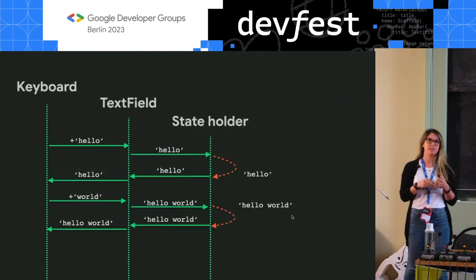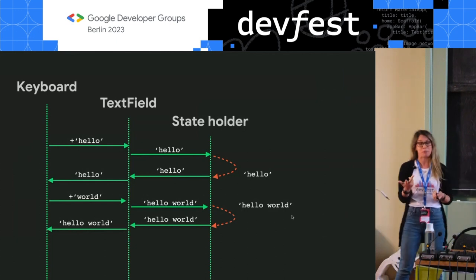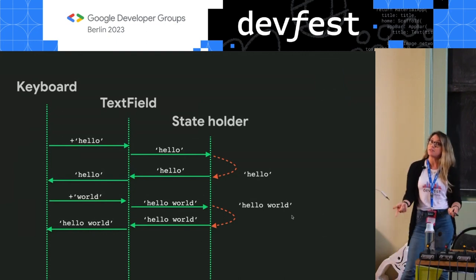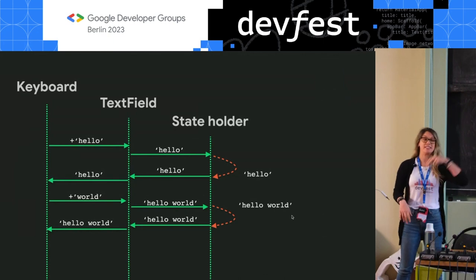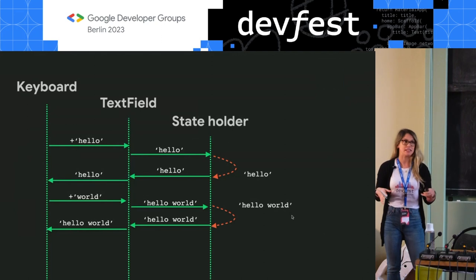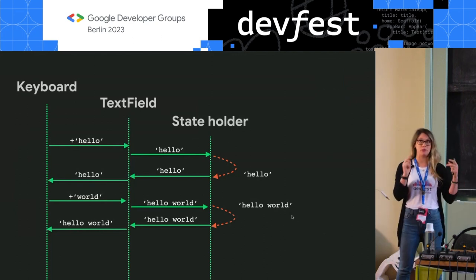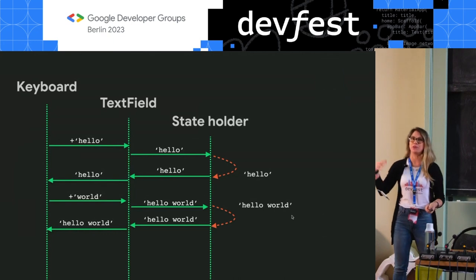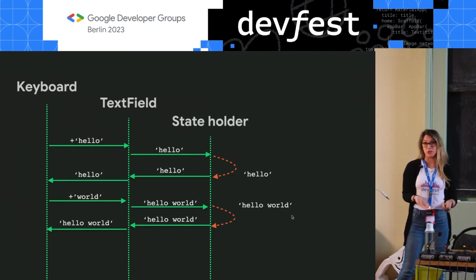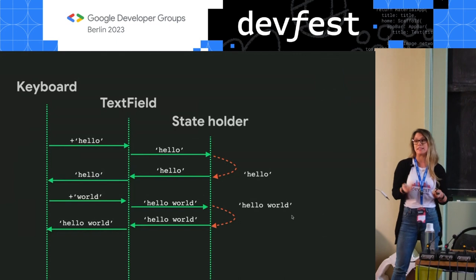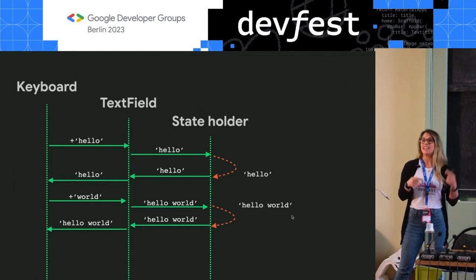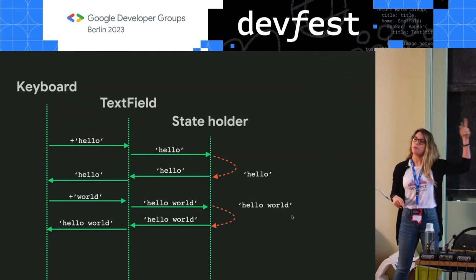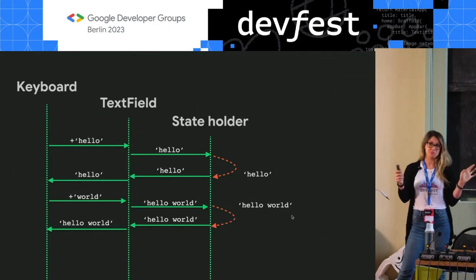For any text field currently in Compose, you have at play at all times three copies of your state. The one that you control — the one you define as variable text by remember saveable — that's one copy. The keyboard has another copy of your state, because it needs to do things like suggest an emoji when you type 'smile', or predict the most likely word you're going to type next. And then there is a coordinator in between that, as you type, tells your state holder to update, and then tells the keyboard back that everything is updated. There is really this very tight sync loop.